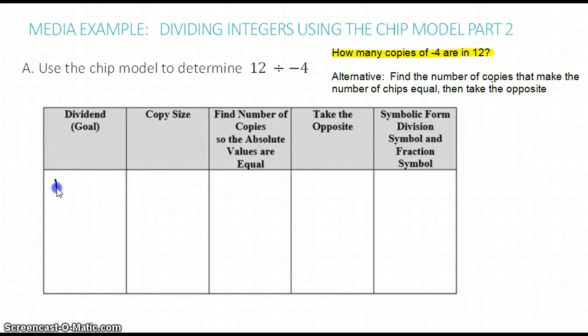Our dividend, or goal, is positive 12. So I'm going to write 12 positive CHIPs. And our copy size is 4 negative CHIPs.